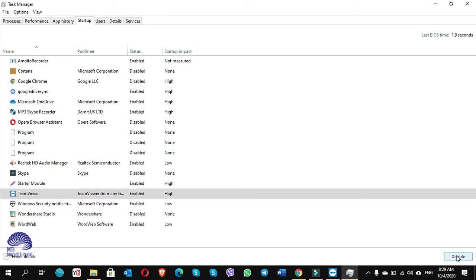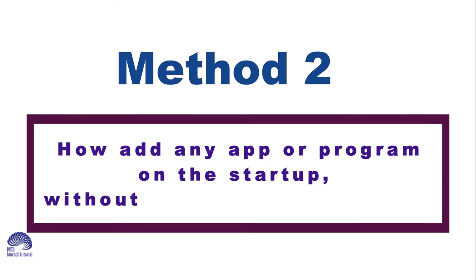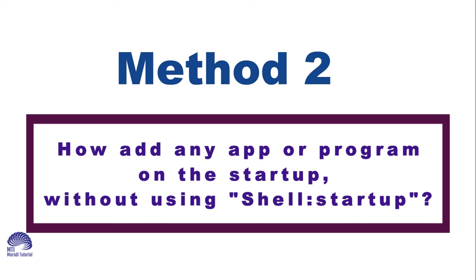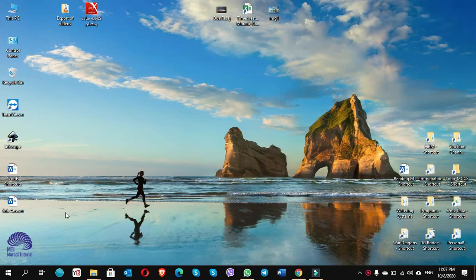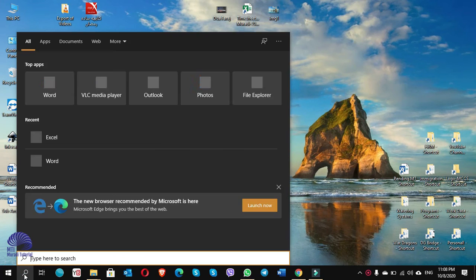Let me show you another method — method number two — on how to add any app or program to startup without using the shell:startup command. It's very easy and a little faster because we don't need to go to Start, type 'run', and write shell:startup. For example, if you want to open any program automatically when Windows starts, simply go to Start search and type the app name — for example, I'll type 'word'.